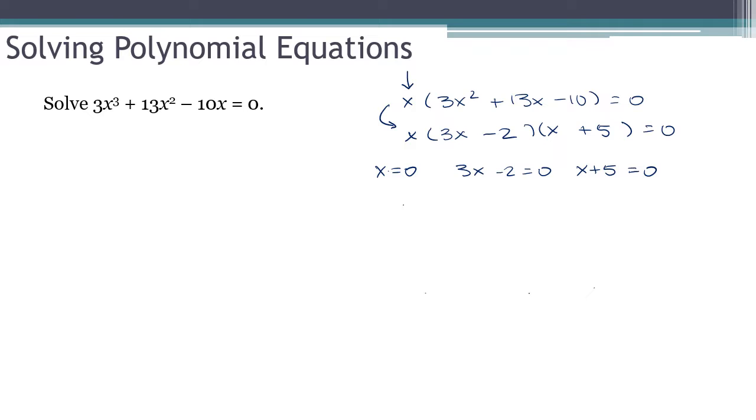You can't lose track of that one because it's going to contribute an answer. So this one here, this last one gives me x equals negative 5. Let's see here. Add 2 to both sides. Divide both sides by 3. And we get 3 answers. Negative 5, 2 thirds, and 0.